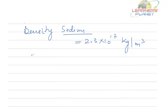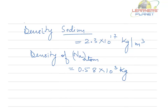The values are generally given for the density of sodium atom. So if you are taking sodium atom, this density is 0.58 into 10 to the power 3 kg per meter cube.